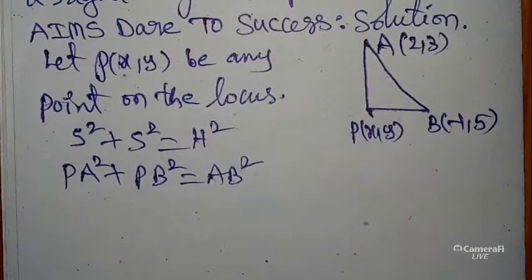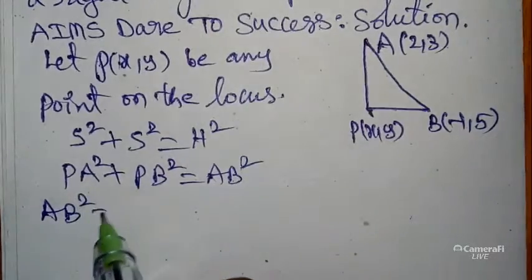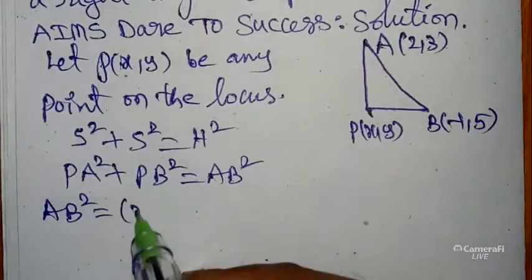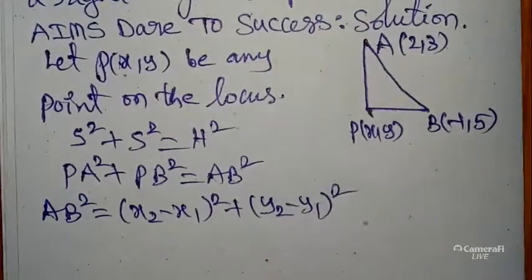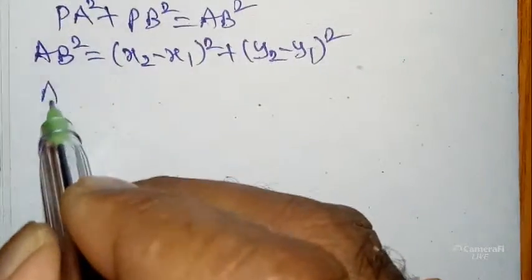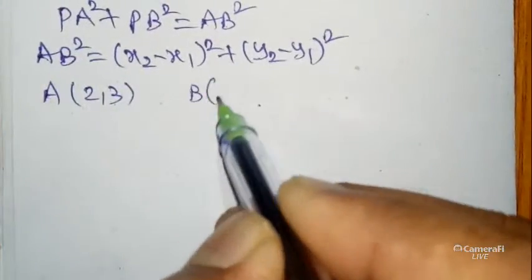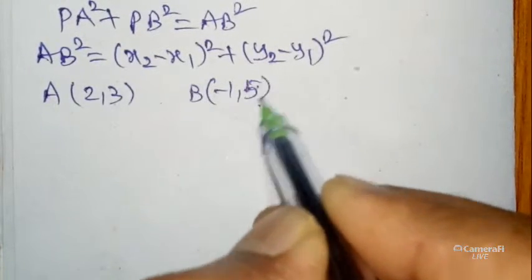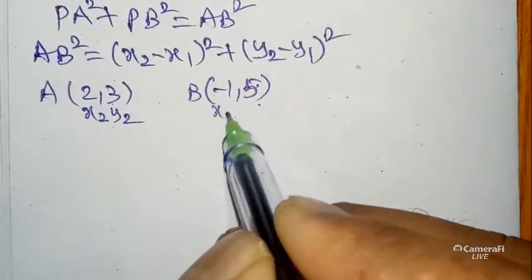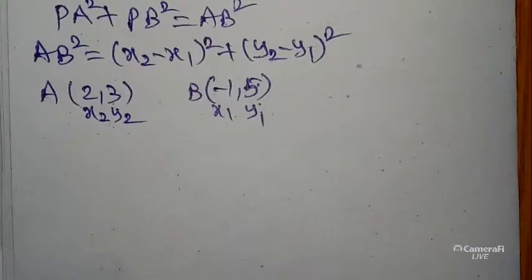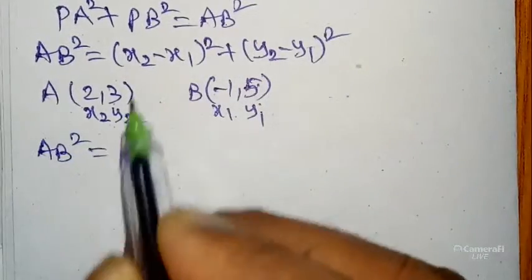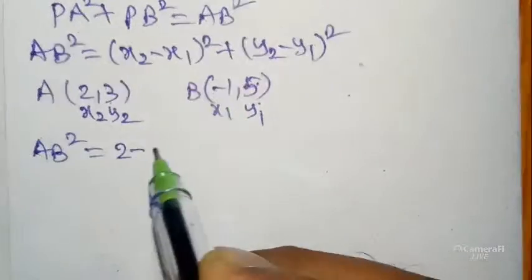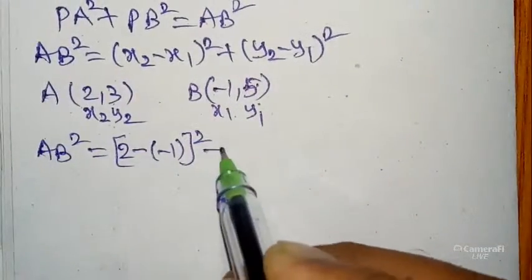Now we use the distance between two points formula: for points (x₁, y₁) and (x₂, y₂), the distance squared = (x₂ − x₁)² + (y₂ − y₁)². Here A(2, 3) is (x₁, y₁) and B(−1, 5) is (x₂, y₂). Substituting: AB² = (2 − (−1))² + (3 − 5)².